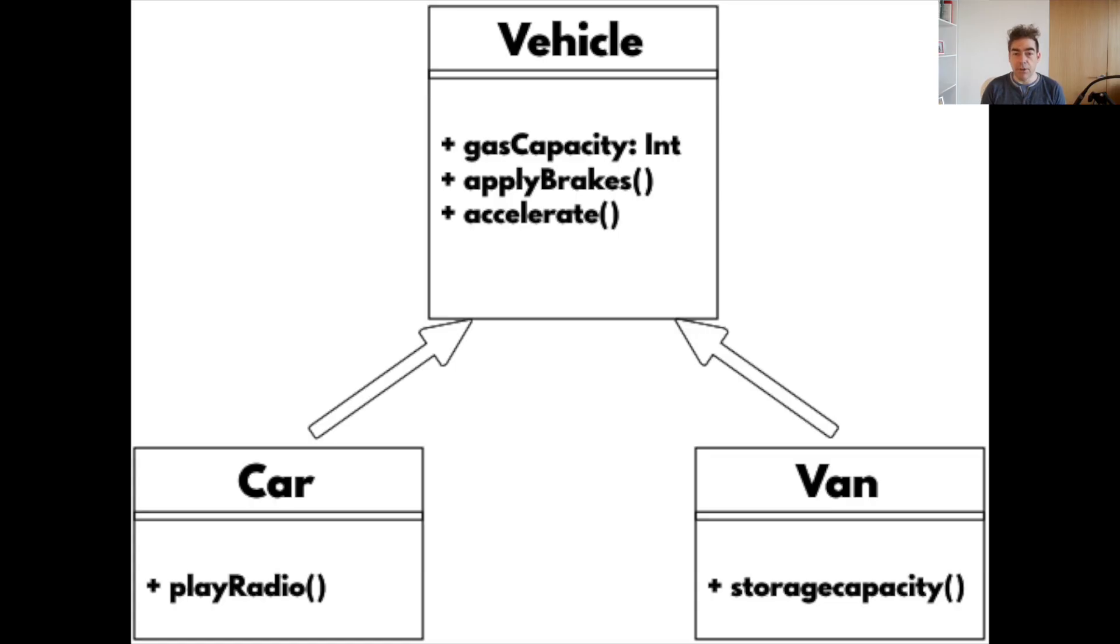So for this example, I'm sorry it's a bit University 101, but you can have a vehicle which might have some properties like gas capacity, it might have some behaviors like apply brakes or accelerate, and that should be replaceable with any instance of the subclass, which in this case might be an instance of a car. And a car has an extra feature here, an extra behavior, which is playing radio, but it's still a vehicle and you'd be able to replace one with the other and there'd be no problem with doing so. And in this simple case, yeah, you're right. It's fine.